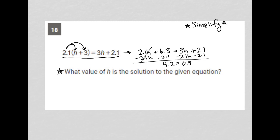So I have 0.9h, of course, and then 2.1 minus 2.1 is gone. So what I have roughly, or exactly here, is 0.9h equals 4.2.